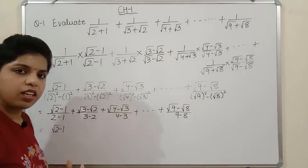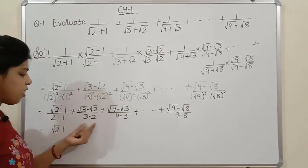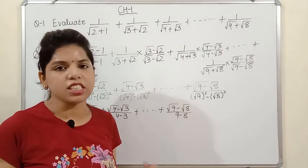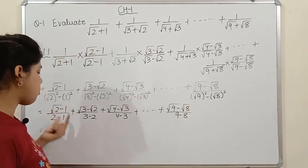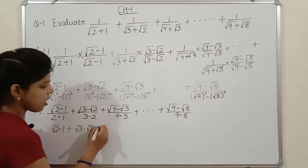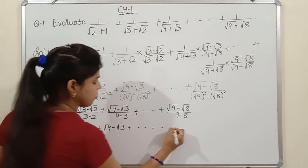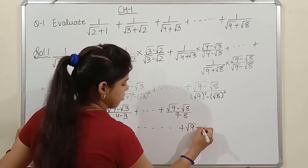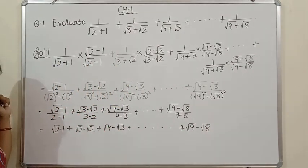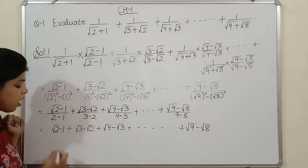Since every denominator is 1, we don't need to write it. So the expression simplifies to: (√2-1) + (√3-√2) + (√4-√3) + ... + (√9-√8). Now you can see that all the terms cancel each other out — √2 cancels with -√2, √3 cancels with -√3, and so on.